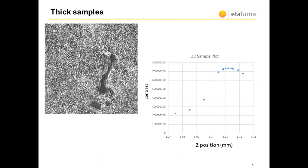Three-dimensional or thick objects exhibit a flattened contrast peak, as expected in this phase contrast image of buccal cells. This demonstrates the concept that there is no single focus in a 3D object whose thickness is greater than the depth of field of the objective.